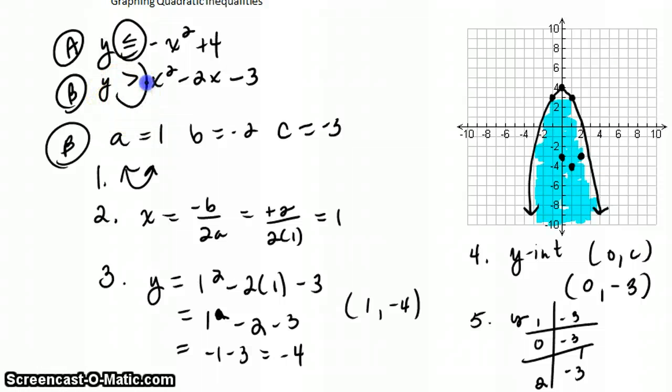So we go ahead and plot that. Now if we look at our inequality, it's y is greater than, not equal to. So we're going to use the dashed lines in this case. So we'll have a dashed parabola. And then our inequality is greater than, so we want to shade above that. So take your other shading color, and you're going to shade everything that's above that parabola.